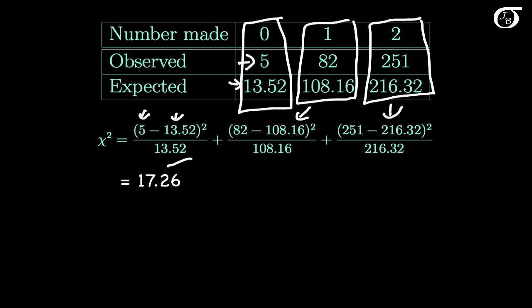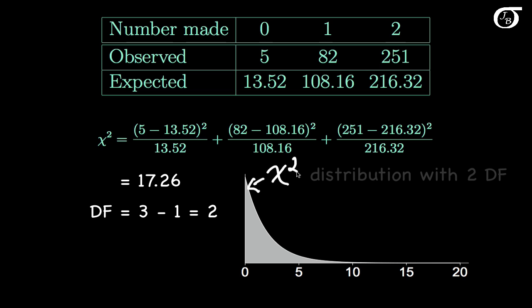Now we need to find the p-value. Under the null hypothesis, the test statistic has approximately a chi-square distribution, but we need the appropriate degrees of freedom. The degrees of freedom are the number of cells minus 1, so here it's 3 minus 1, or 2. Plotting a chi-square distribution with 2 degrees of freedom, the observed value of the test statistic is at 17.26.